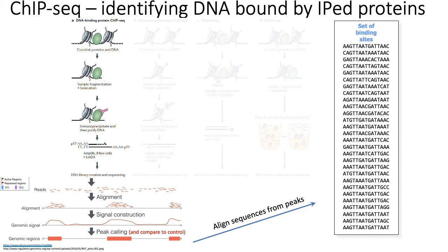The idea being that, since transcription factor-DNA interactions are transient, by cross-linking you're basically fixing them in place so that TFs aren't really moving around, and you're really able to capture that TF-DNA binding interaction.